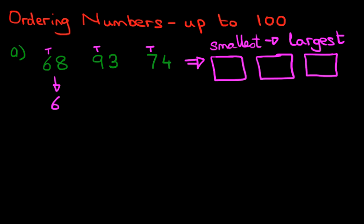So how many tens are there in the first number? In 68, there are six tens. In number 93, how many tens are there? There are nine tens. And in number 74, how many tens are there? There are seven tens. Now, what do you notice about these three numbers? All three numbers are different. And what that means is that we can then order the numbers without even looking at the units.